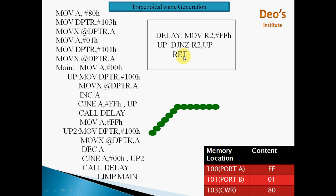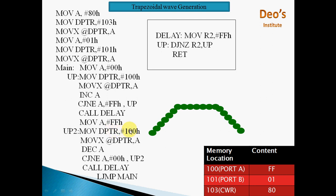On return, MOV A, #FFH, MOV DPTR, #100H, MOVX @DPTR, A — then DEC A. CJNE A, #00H, UP2 — if A is not 00H, jump to UP2, send the value to Port A, decrement by 1, compare with 0 again. This continues till A becomes 0. When A becomes 0, CALL DELAY is executed again — till the delay runs, 00H is sent to DAC, generating the flat bottom of the trapezoidal waveform.